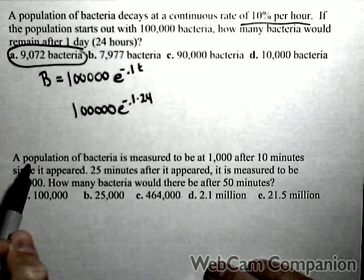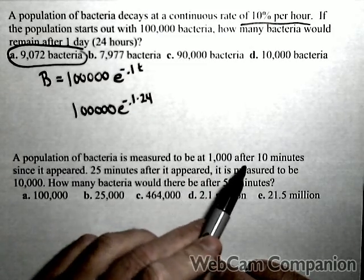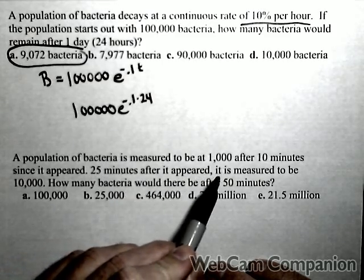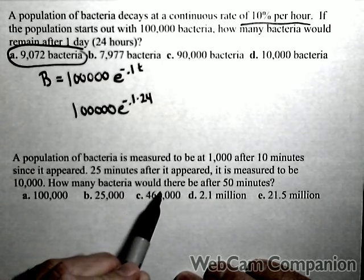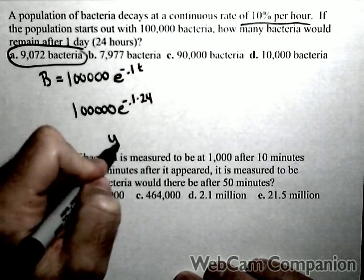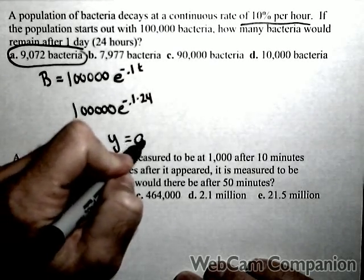In the second one, a population of bacteria is measured to be at 1,000 after 10 minutes since it appeared, and 25 minutes after it appeared is measured to be 10,000. So how many would there be after 50 minutes? Well what we're going to do is we're going to use the other form of an exponential model in this case.